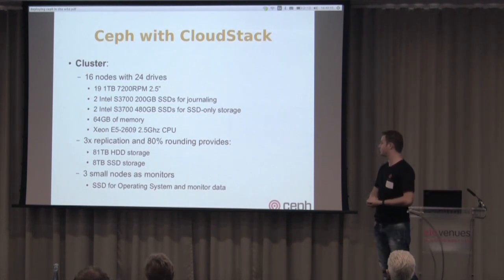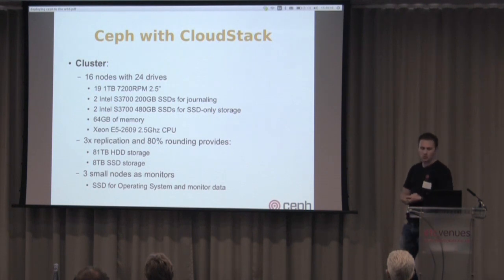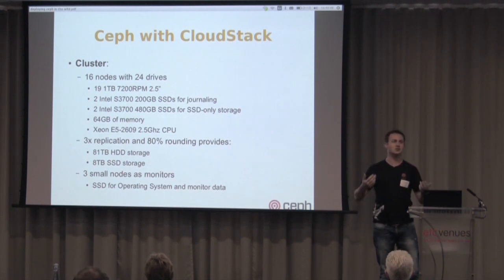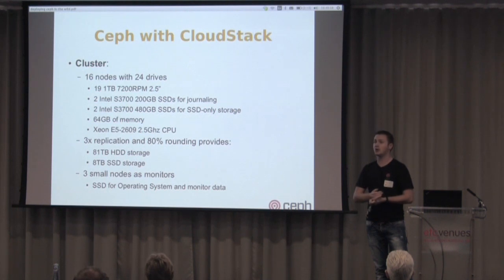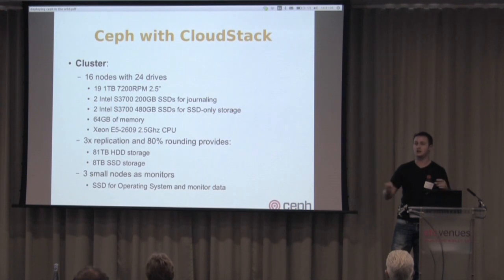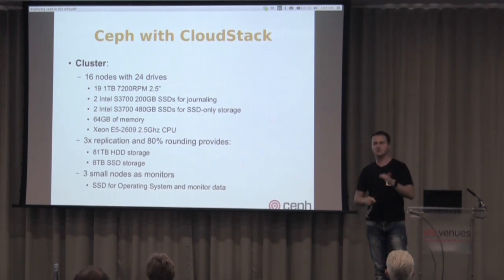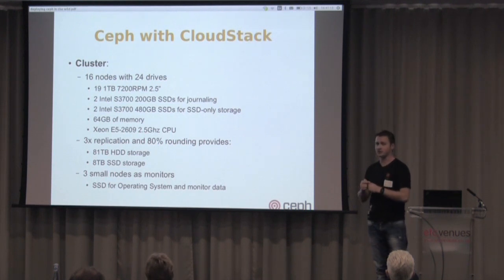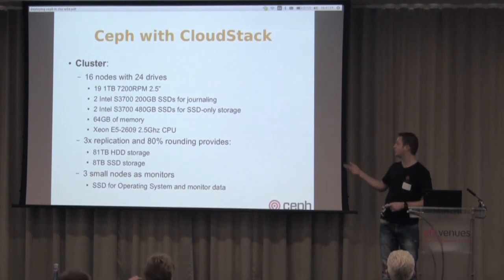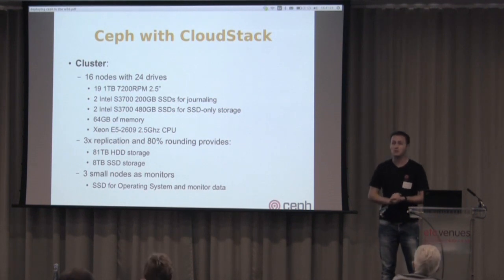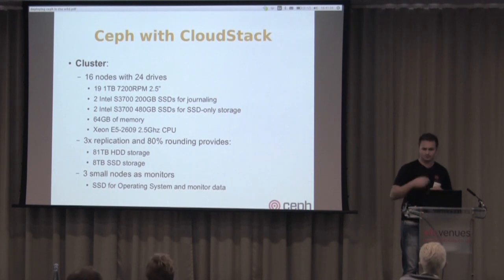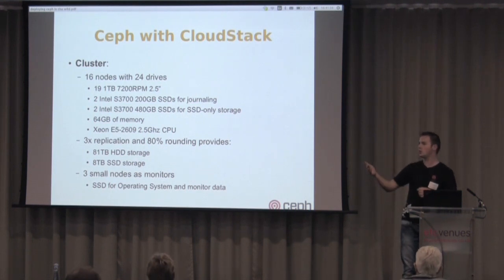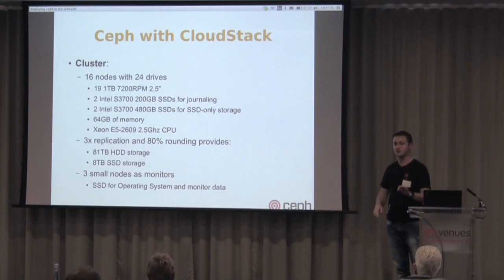We have three small nodes running as monitors with an SSD for the OS and monitor data. Why dedicated machines instead of collocating monitors with OSDs? Technically you can run monitors anywhere, but monitors do a lot of synchronous IO to their data store to stay in consistent state with all the maps. More importantly, monitors are very time-sensitive — they have to reply to heartbeats within milliseconds. If there's high CPU load on OSD machines during recovery, monitors may not reply to heartbeat checks, an election starts with no quorum, and the whole system stops again. Consistency goes over availability.